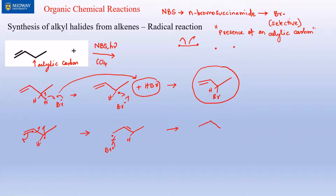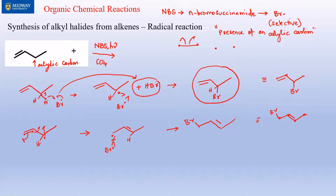The Br• can now combine with that odd electron, placing Br on the new position. Whether you draw it above or below doesn't matter. One product has the double bond at the end; the other has it in the middle. Based on Zaitsev's rule, the more substituted double bond (in the middle) is the major product.